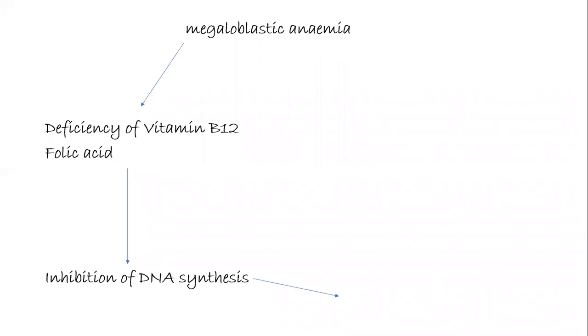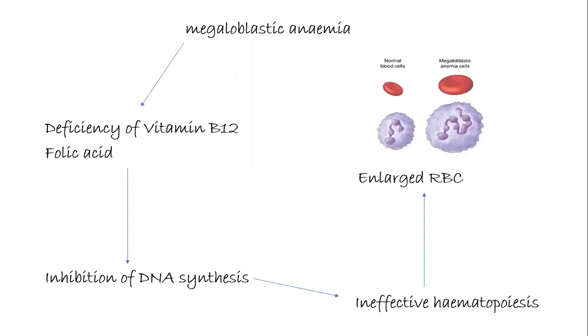Today we are going to see about megaloblastic anemia. Megaloblastic anemia is mostly caused due to deficiency of vitamin B12 and folic acid. Vitamin B12 and folic acid are coenzymes required for the synthesis of DNA. Due to this, if vitamin B12 and folic acid are deficient, then there is inhibition of DNA synthesis. If DNA is not synthesized properly, it leads to ineffective hematopoiesis.